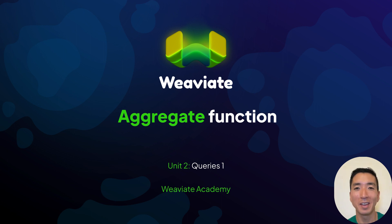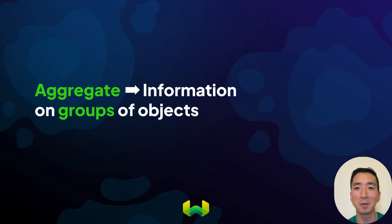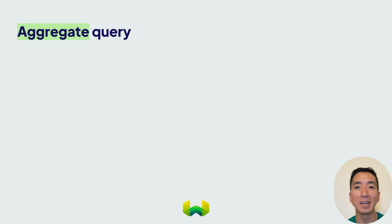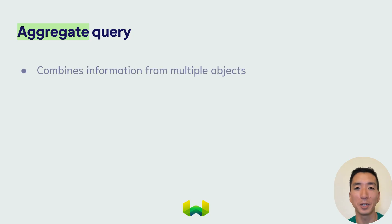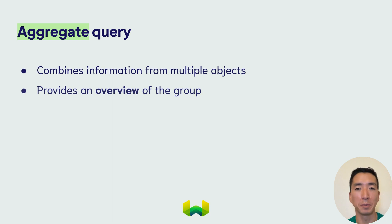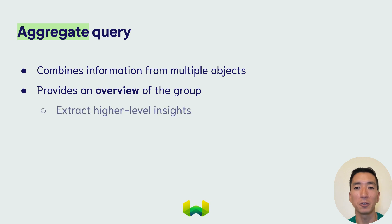Hey there and welcome back. In this video we'll introduce you to aggregate queries, a powerful way to compile information from multiple objects and gain insights from your data. Aggregate queries allow you to combine information from several objects into a single one, providing you with an overview of the group. This is especially useful when you want to extract insights that describe the result set as a whole, such as how the search results might differ from the rest of the data set.